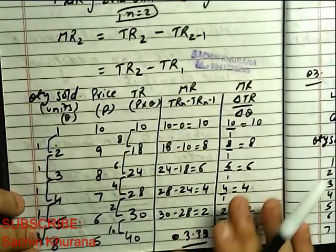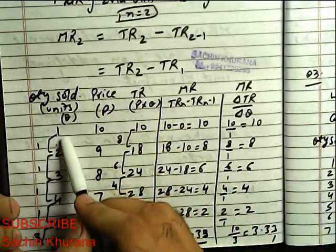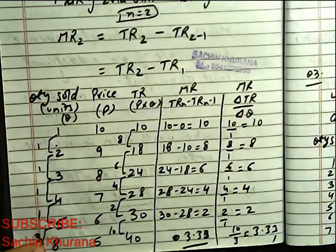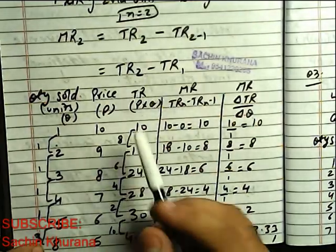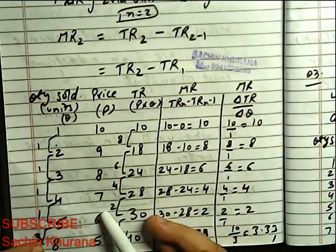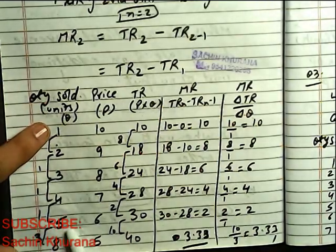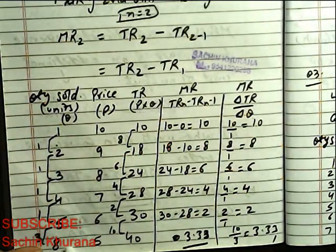Let's see an example. We have quantity sold: one, two, three, four, five, six, then eight. Price: ten, nine, eight, seven, six, five. So one to five is consecutive but then it is non-consecutive, right?